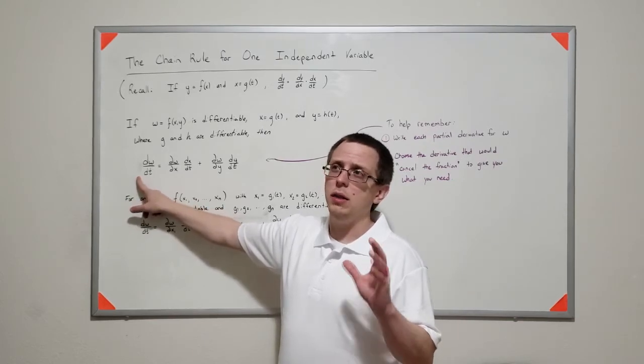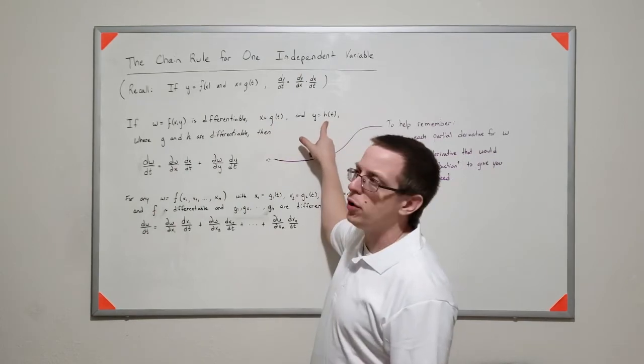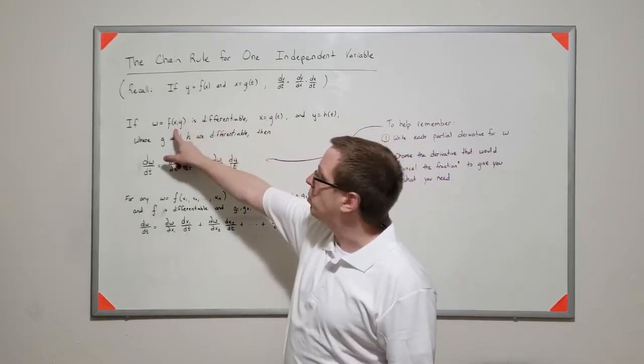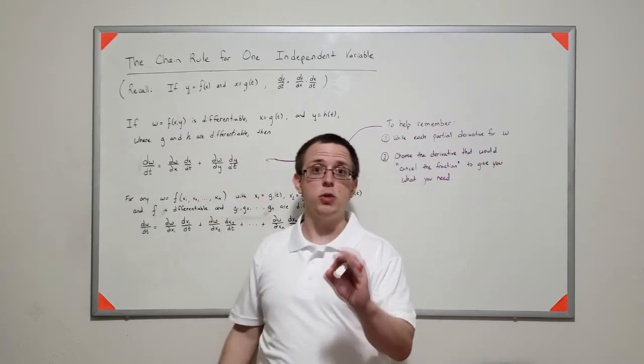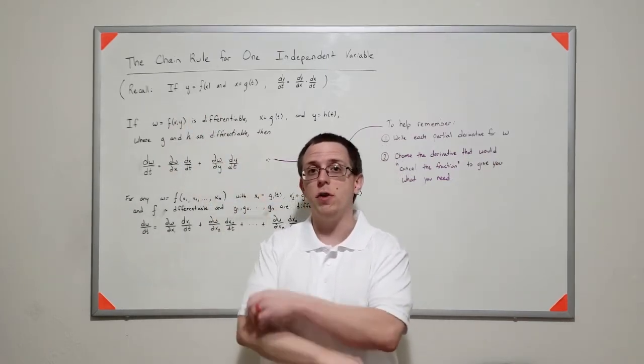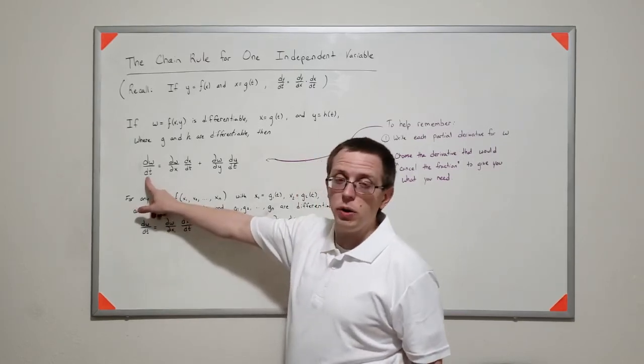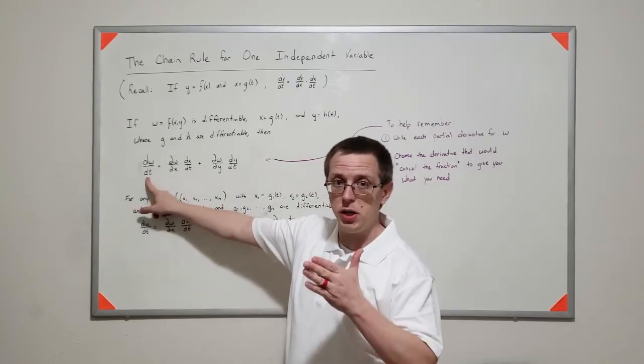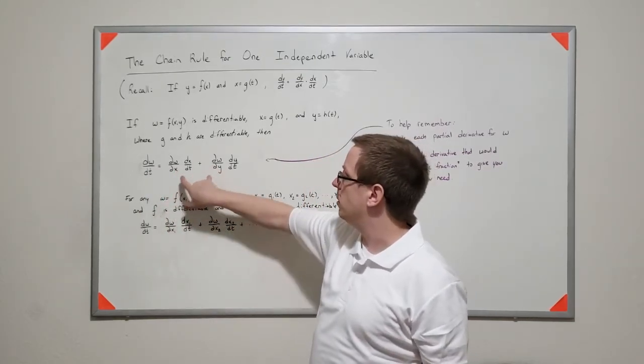And the reason why I say that is because if x and y are both functions of t, if I were to plug this in here, I would actually get a function of just one variable, w would actually be a function of t and t alone. So you can end up getting a derivative that's with respect to a single variable, but you do it through using these partial derivatives.